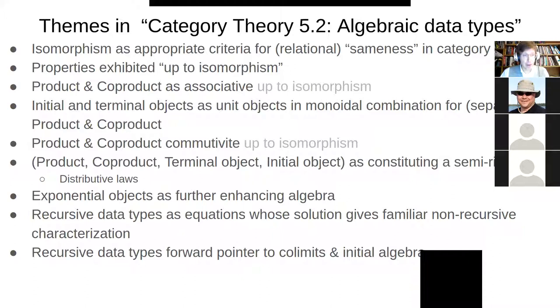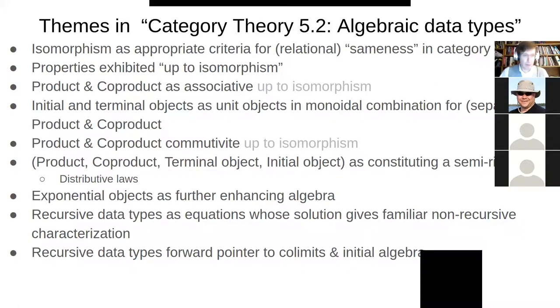Product and co-products are associative up to isomorphism. Moving on, with product and co-product we see how they interact as universal constructions themselves — how they interact with two other types of universal constructions: initial objects and terminal objects. A terminal object serves as a unit object with respect to product, so if we take the product of any object A with a terminal object, we get A back.